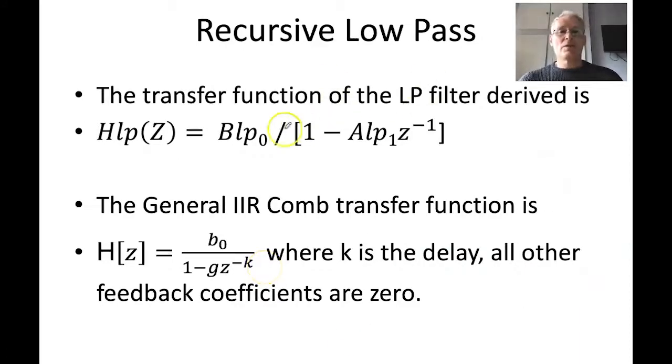The transfer function for that low-pass filter can be derived as follows. We've got the feedforward coefficient here, I've just labeled it B_lp0, so we can differentiate between the B coefficients of the low-pass filter and the B coefficients of the IIR comb. This is B_lp0 divided by 1 minus A_lp, and it's a single delay term, hence this minus 1.